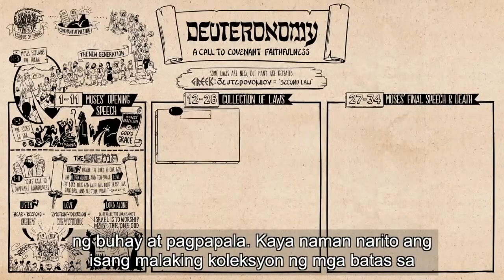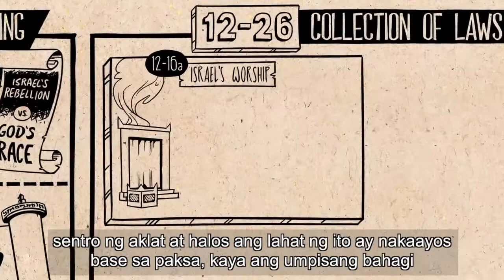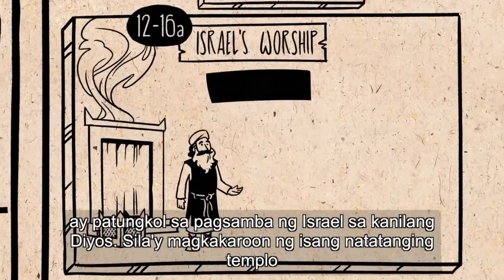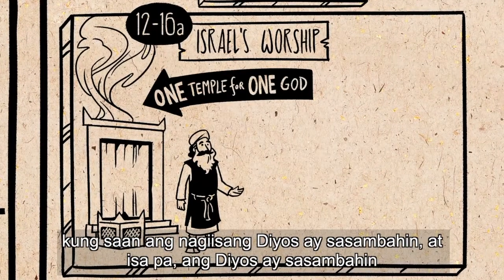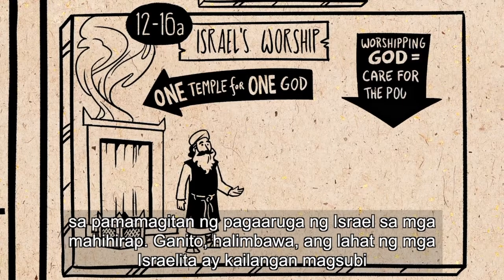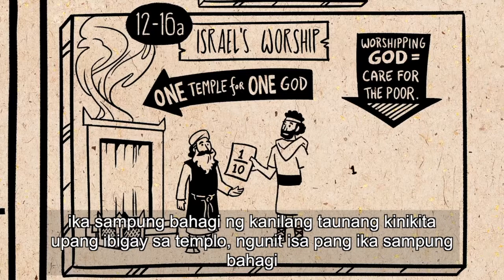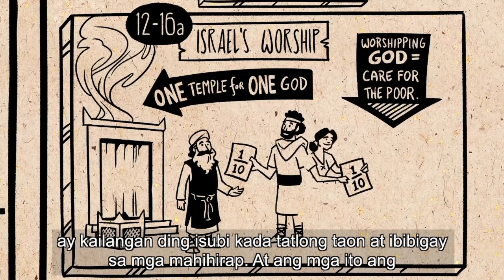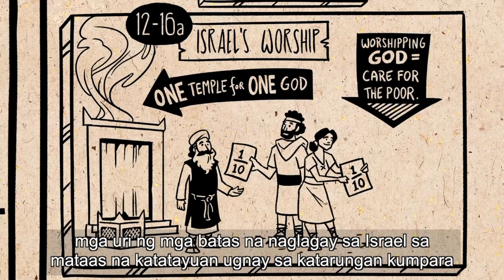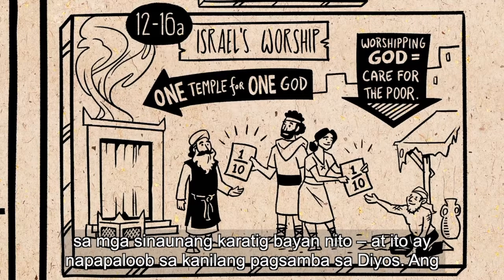We come to the large collection of laws at the center of the book, roughly arranged by topic. The opening section is about Israel's worship of their God — they were to have one central temple where one God would be worshipped. God was also to be worshipped in Israel's care for its poor. For example, all Israelites were to set aside one tenth of their annual income to be given to the temple, but another tenth was to be set aside every three years and given to the poor. These are the kinds of laws that put Israel on the cutting edge of justice in comparison to their ancient neighbors, and it was all bound up with their worship of God.